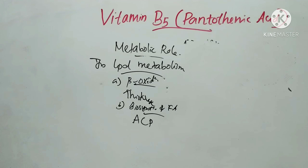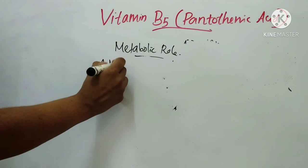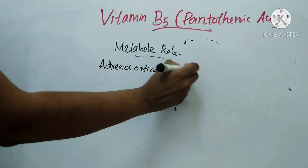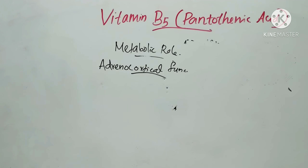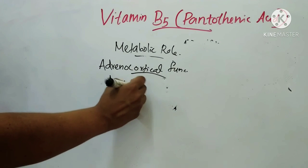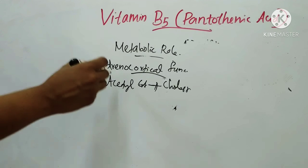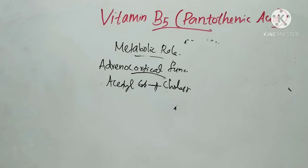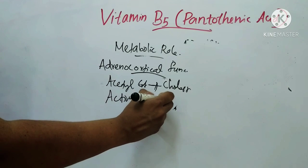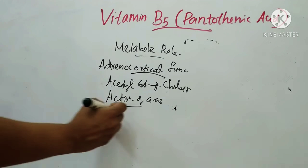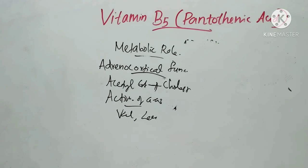Pantothenic acid is involved in adrenocortical function. It is essential for the formation of adrenocortical hormones from acetyl-CoA and cholesterol. Pantothenic acid-deficient animals have reduced levels of adrenal cholesterol. Additionally, coenzyme A is required for the activation of some branched-chain amino acids such as valine and leucine.